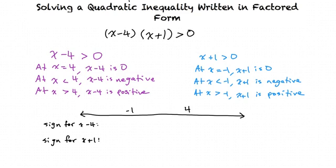Starting with x minus 4: we know that x minus 4 is negative at x less than 4, so everything before 4 is negative. x minus 4 is 0 at x equals 4, and after 4, x minus 4 is positive.